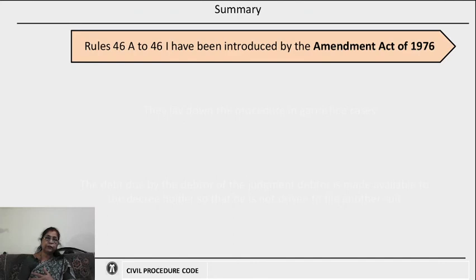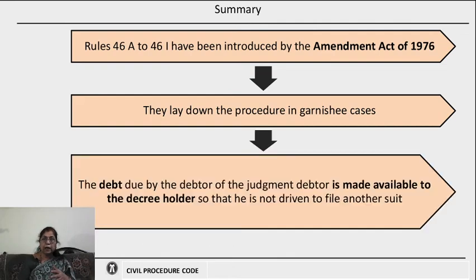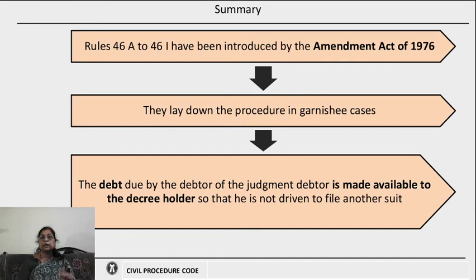As a summary, the amendment act of 1976 introduced Rules 46A to 46I in Civil Procedure Code Order 21. This is a very effective procedure in garnishee cases — the debt due by the debtor of the judgment debtor is made available to the decree holder so that he is not driven to file another suit. He need not approach the court again for a decree and may not be deprived of the fruits of his decree.